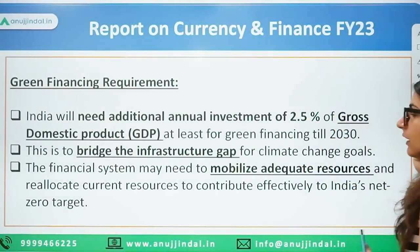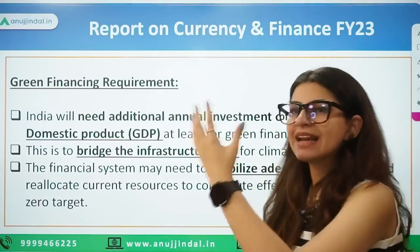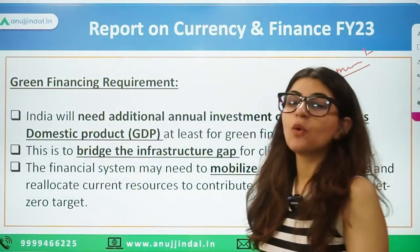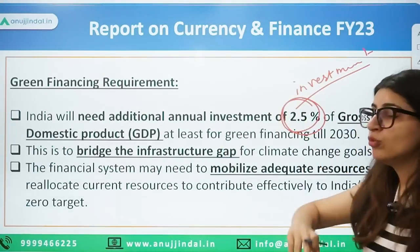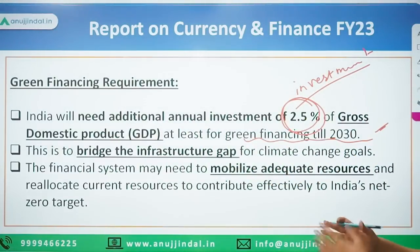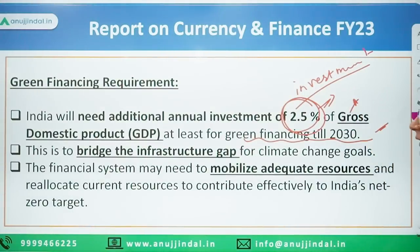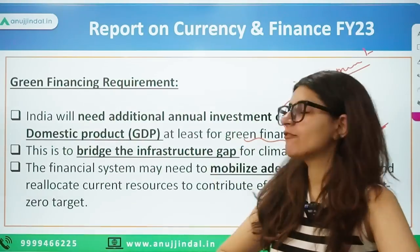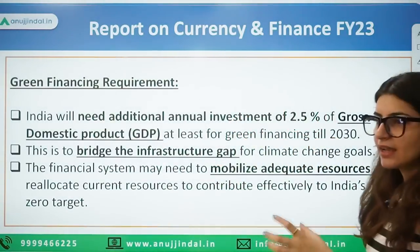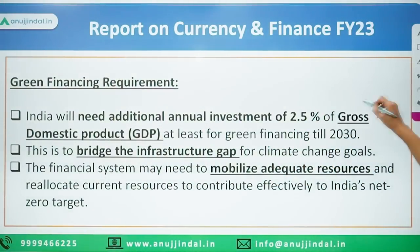The third dimension is about green financing. India will need additional annual investment of 2.5% of GDP — this is an important point to remember. Why? Because climate change is happening at such a scale and we have to think of a sustainable future. This annual investment towards green financing is to the tune of 2.5% of GDP, required to bridge the infrastructure gap and to mobilize adequate resources and reallocate current resources.